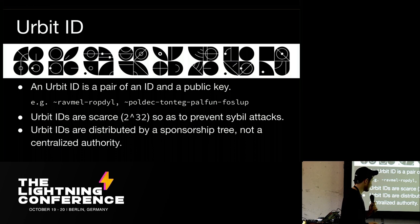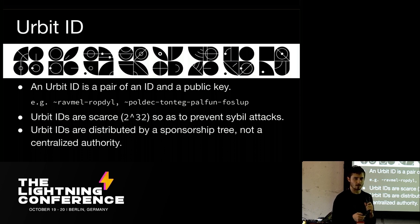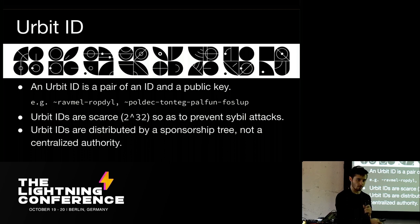Urbit IDs are distributed by a sponsorship tree, not a single centralized entity. Despite the fact that Urbit was developed initially by a single company, there are now between 5,000 and 10,000 address space holders who hold blocks of address space, can distribute it, and run infrastructure nodes. The Urbit ID system also specifies the structure of the network. Similar to DNS, there are multiple layers: in DNS there are 13 root servers, while in Urbit there are 65,000-plus servers acting as infrastructure providers, and 256 above that coordinating those providers.